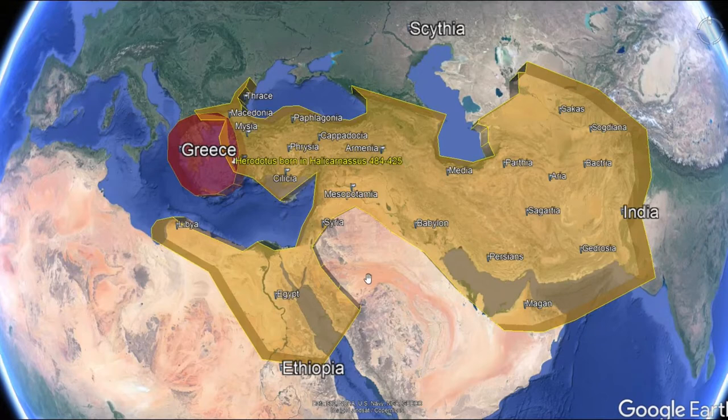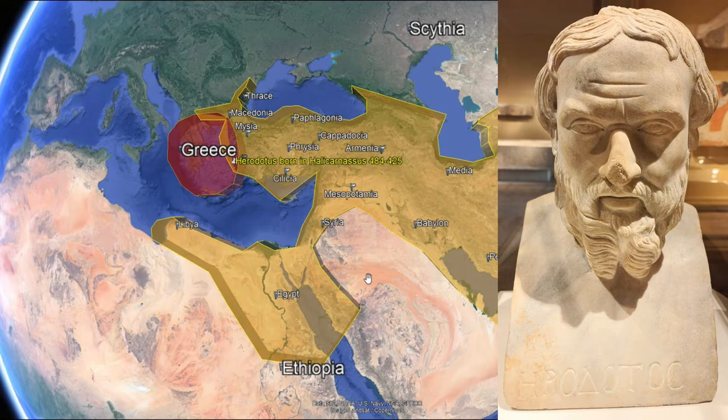Greetings everybody. Welcome to the Periodic Table of History, where we study history in four dimensions. We're going to take a look at Herodotus today. Herodotus is somebody I've always heard about, and he is given the title, The Father of History.